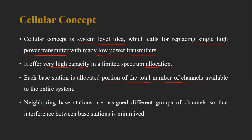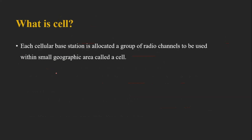Neighboring base stations are assigned different groups of channels so that interference between base stations is minimized. We need to ensure that neighboring base stations do not share the same frequency — they cannot use the same frequency or even adjacent frequencies. These are the main points of the cellular concept.